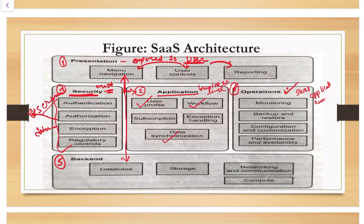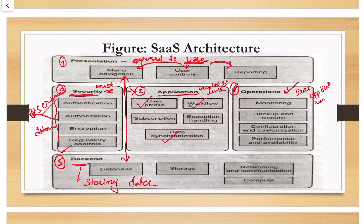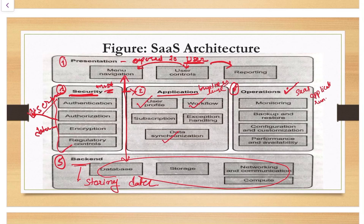The fifth layer is the backend layer. This layer is responsible for the capabilities required for storing data and moving it around the network. Database storage, computation, code execution, networking, and communication are important activities carried out in the backend layer. Whatever data is stored in the cloud is handled by this backend layer.